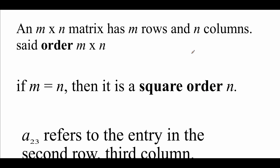Just a little introductory stuff with our matrices. First thing we're talking about is the order of a matrix, and the order deals with how many rows and how many columns a matrix has. So if we've got M number of rows and N number of columns, then we would say our matrix has the order M by N. If that number M matches up with that number N — the same number of rows and columns — then we would say we're dealing with a square matrix.